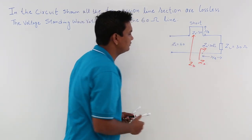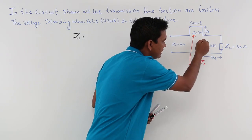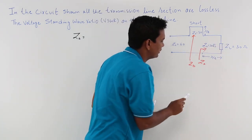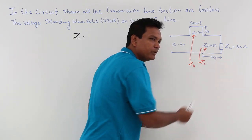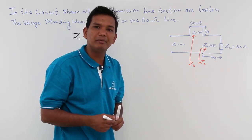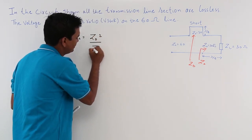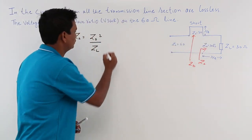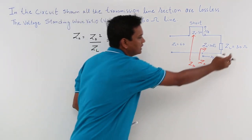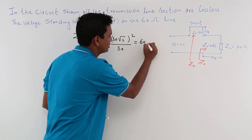How can I find ZA? ZA is the input impedance looking into that segment. The length of this transmission line segment is lambda by 4. We already know that if the transmission line is of length lambda by 4, then the input impedance will be Z naught squared by ZL. So in this case, it would be (30 root 2) squared divided by ZL, which is 30. If I simplify this, 30 into 2 divided by 1 gives 60 ohms.